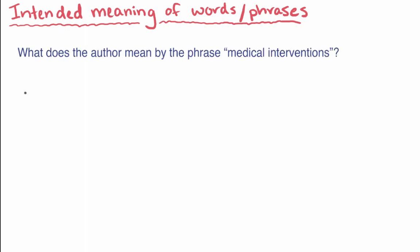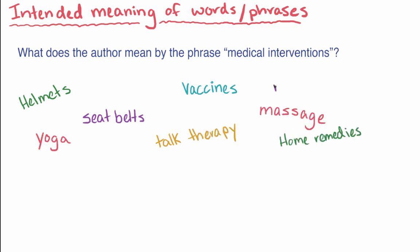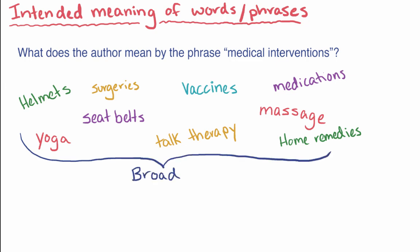An example of this question would be, what does the author mean by the phrase medical interventions? If in the passage the author introduces the idea of medical interventions and then gives you examples of helmets, seat belts, vaccines, talk therapy, massages, home remedies, yoga, medications, and surgeries, then you get the sense that the author's definition of medical intervention is really pretty broad. Instead, if the author talks about medical interventions and then just discusses different types of antibiotics, then that would be a more narrow definition of the term.